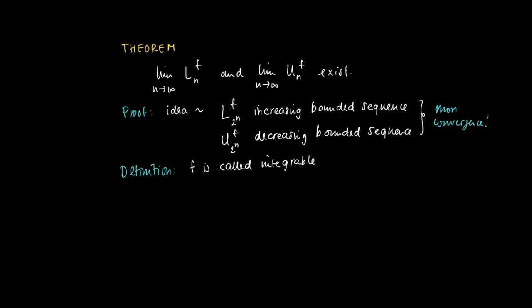we call f integrable over [a,b] if only those limits are the same, so that the lower estimates are converging—we know that—but they converge to the same number as the upper estimates. This is called the number I, or the definite integral of f over [a,b].